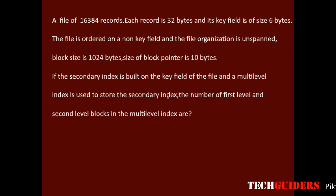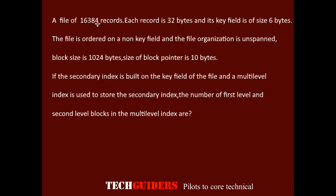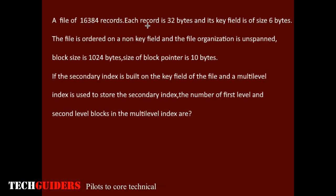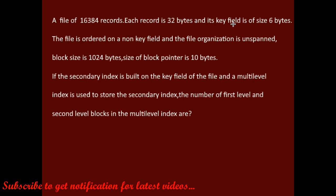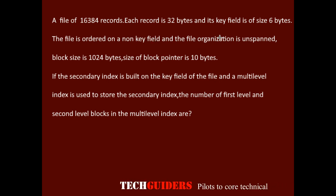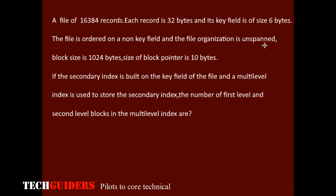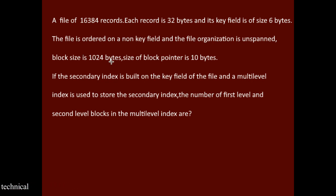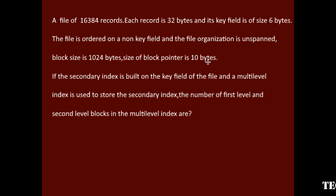Consider this example. A file of 16,384 records, each record of size 32 bytes. The key field is of size 6 bytes. The file is ordered on a non-key field and the file organization is unspanned. The size of the block is 1024 bytes and the size of the block pointer is 10 bytes.